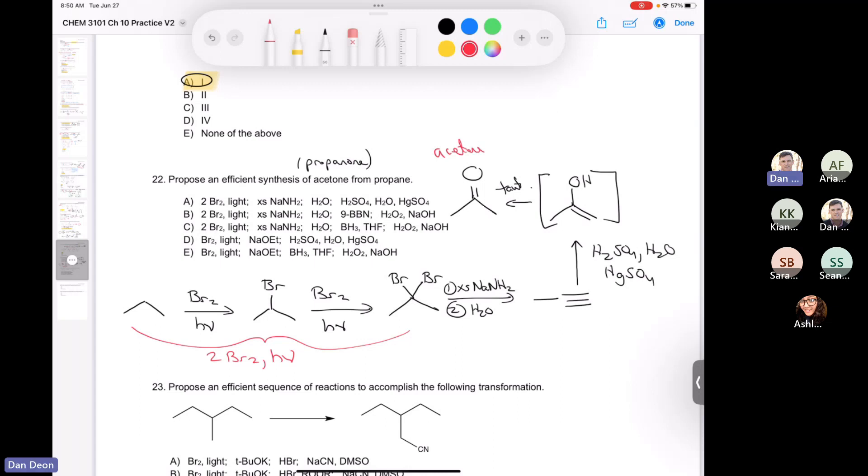So we'll have tautomerization to give you the ketone, which is acetone. So this is acetone right here. And so the correct reaction conditions are going to be the first ones: bromine and light, followed by excess sodium amide, quench it with water, and then we do the Markovnikov addition of water across the triple bond.